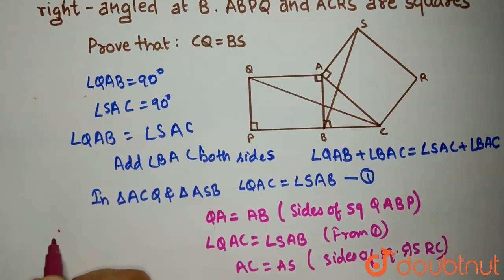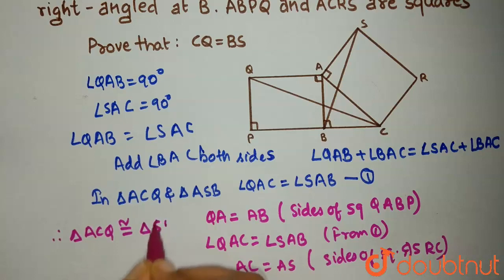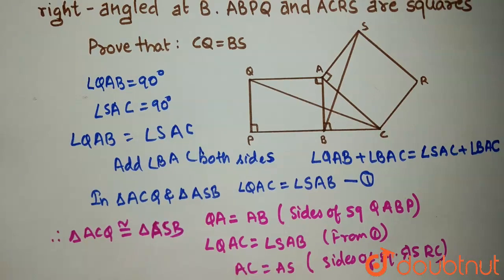Therefore, triangle ACQ is congruent to triangle ASB using SAS congruence criteria. From here,